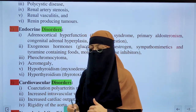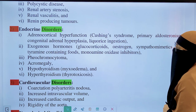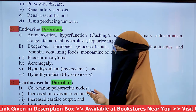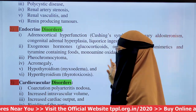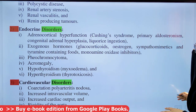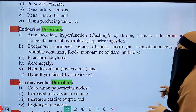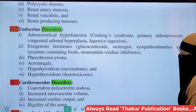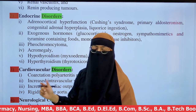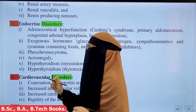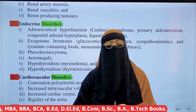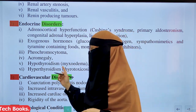Endocrine disorders that can cause hypertension include adrenocortical hyperfunction such as Cushing's syndrome, licorice ingestion as a crude drug, exogenous hormones like glucocorticoids and estrogen, sympathomimetics, tyramine-containing foods, monoamine oxidase inhibitors, and pheochromocytoma, which is a tumor of the adrenal gland.